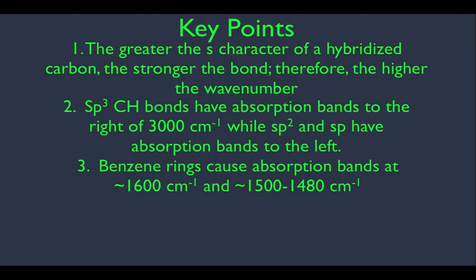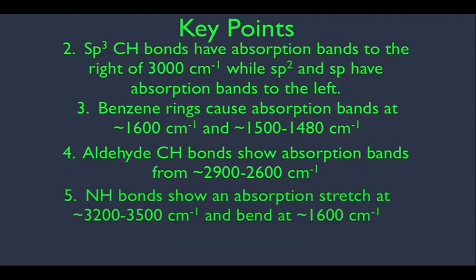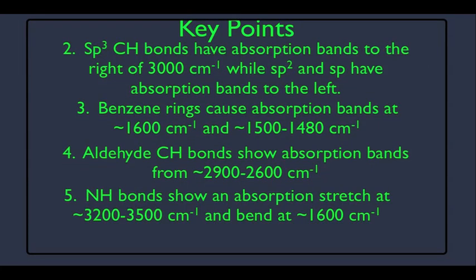The third thing we're going to see is that benzene rings have certain absorptions at around 1600 and between 1480 and 1500. Fourth, aldehyde CH bonds show absorption bands around 2600 to 2900. And fifth, NH bonds show a stretch near 3200 to 3500 and a bend at around 1600.